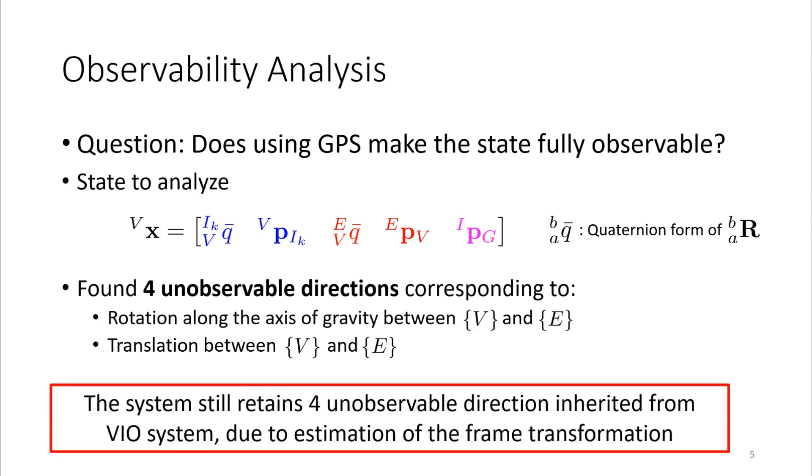From our analysis, there are four unobservable directions which correspond to the rotation along the axis of gravity between the VIO and ENU frame, and the translation between the VIO and ENU frame. They are inherited from the VIO system.